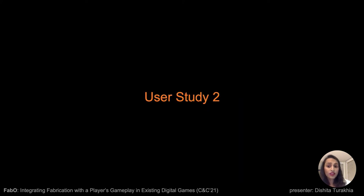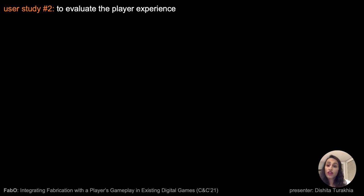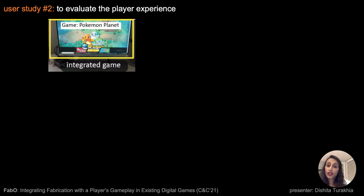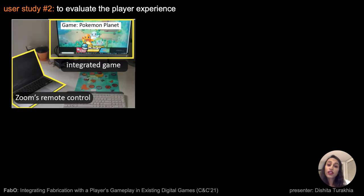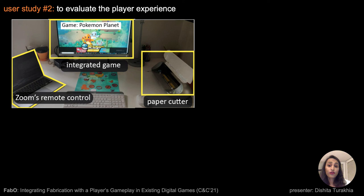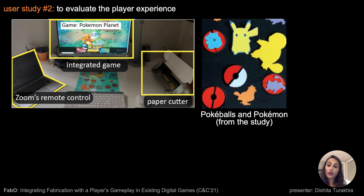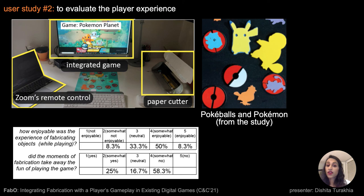We also conducted a second user study to evaluate the player's experience of using FABO. In this study, 12 participants played the game Pokemon Planet and remotely controlled a paper cutter to fabricate objects such as these Pokeballs and Pokemons from their games. Our results show that while most participants enjoyed the experience of fabricating objects from their games, some also wanted more control over choosing the objects and the timing of fabrication. I invite you to read the paper for more details and insights from our studies.